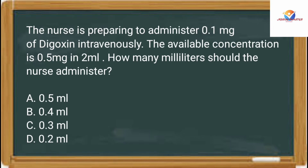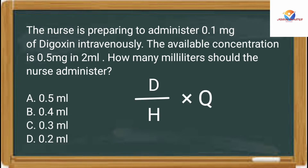A nurse is preparing to administer 0.1 mg of digoxin intravenously. The available concentration is 0.5 mg in 2 mL. How many mL should be administered? Option A: 0.5 mL. Option B: 0.4 mL. Option C: 0.3 mL. Option D: 0.2 mL. The correct answer is 0.4 mL.